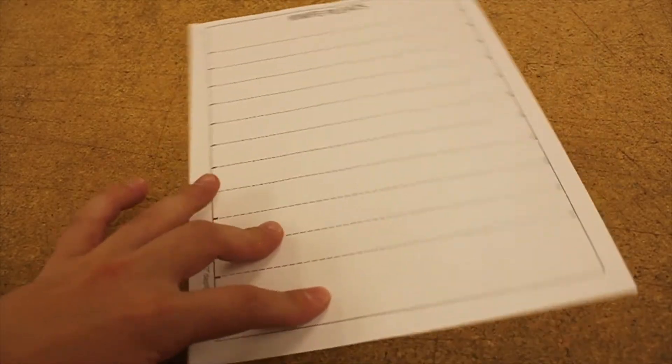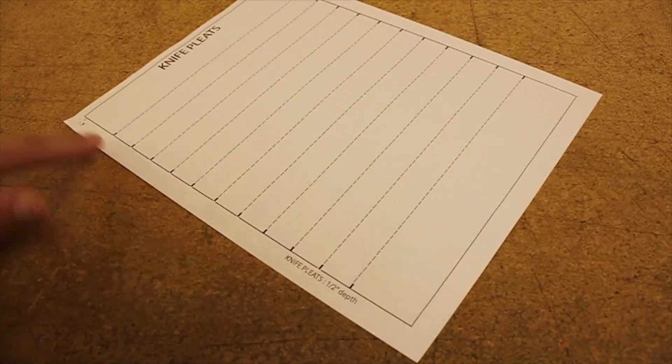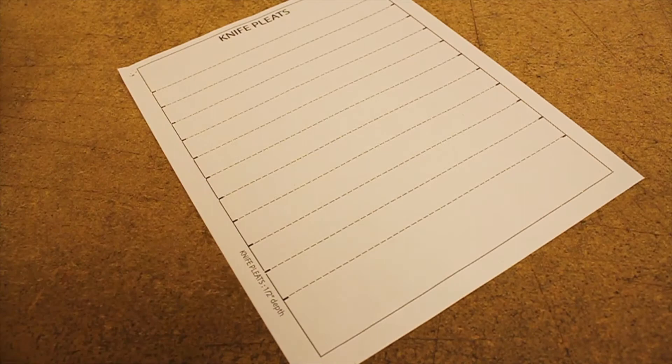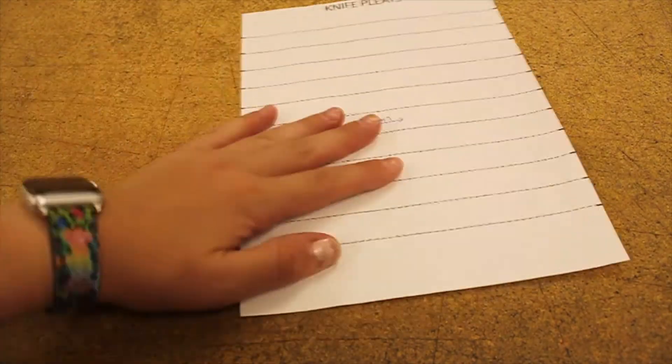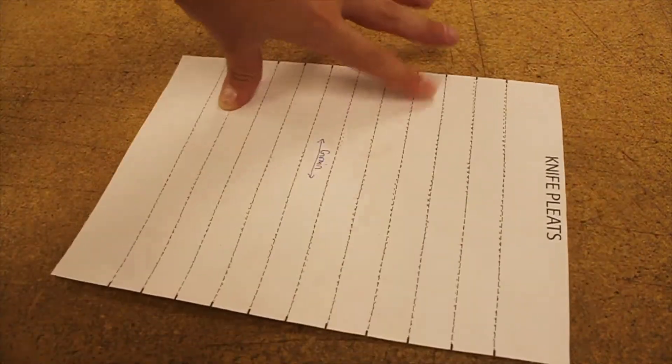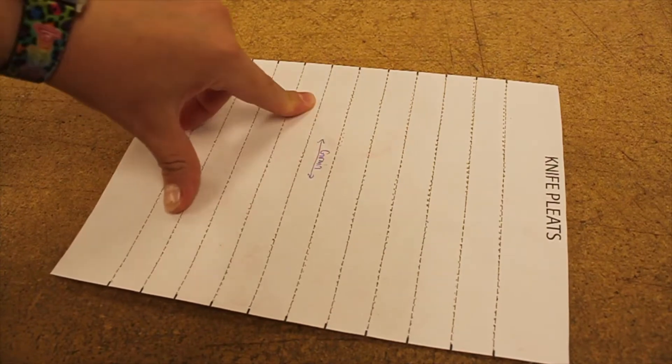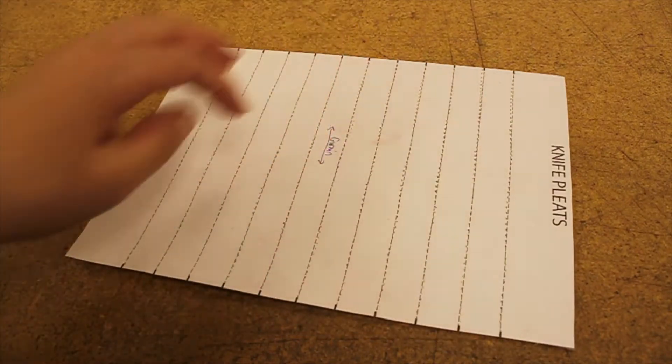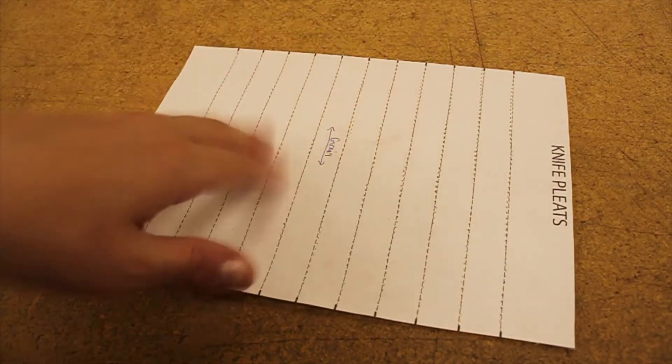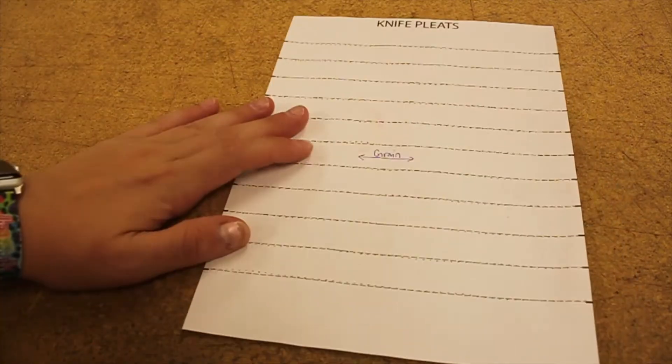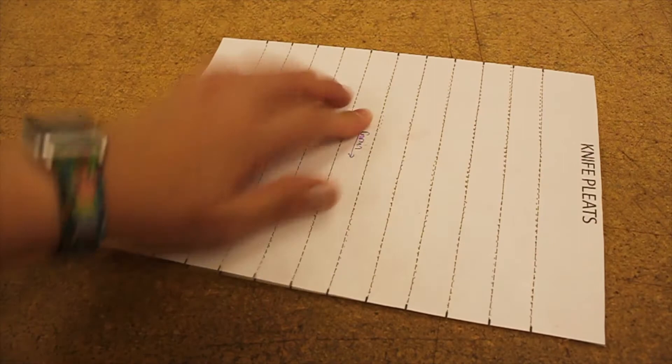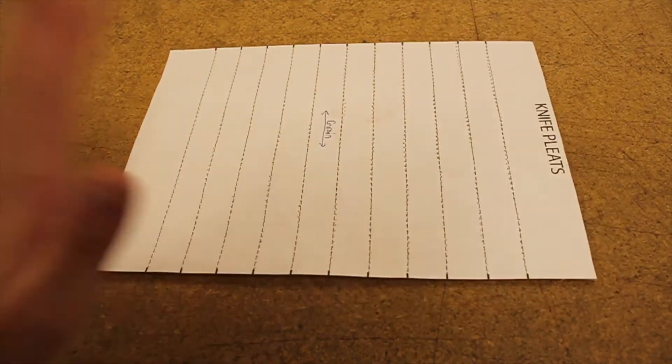When you first get this paper, you're going to want to just cut it out so that it looks something like this. You'll need to indicate grain, which should be going in the width direction on this pattern piece, not length. So go ahead, cut it out, mark the grain line, and then get your fabric ready.